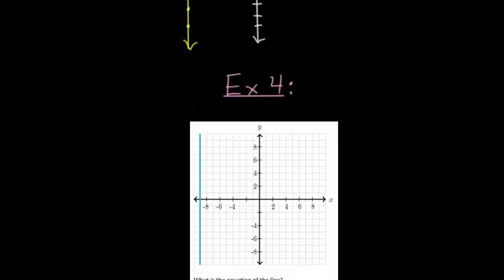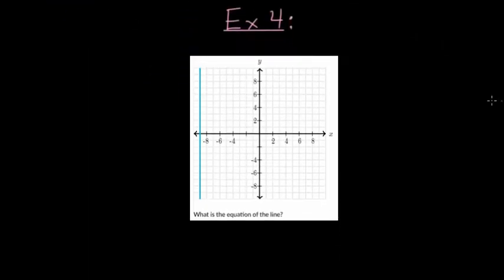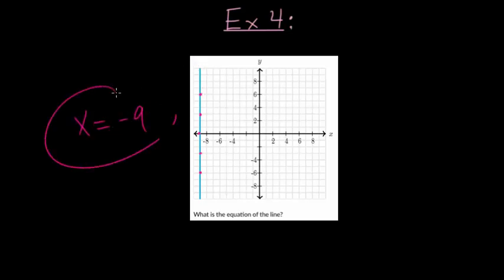For the final example, we just need the equation of the line. Every point on this line has a different y value, but they all share the same x value of negative nine. So the equation of this line is simply x equals negative nine.